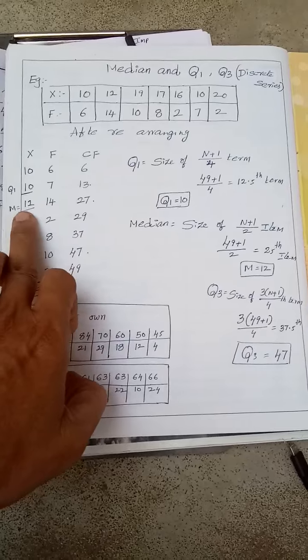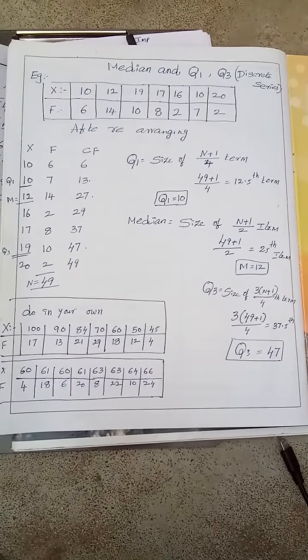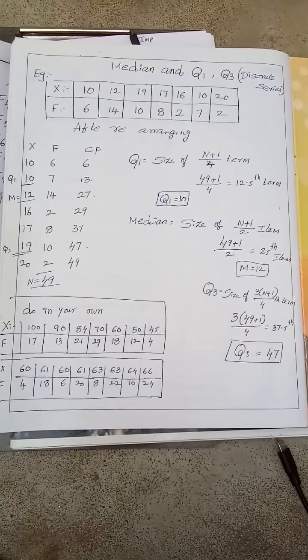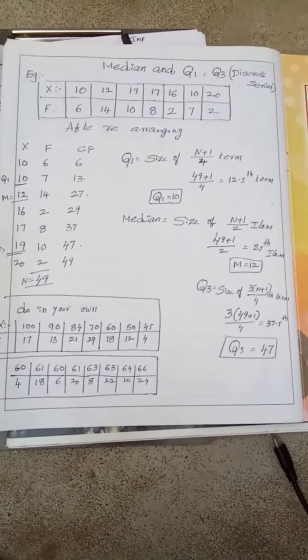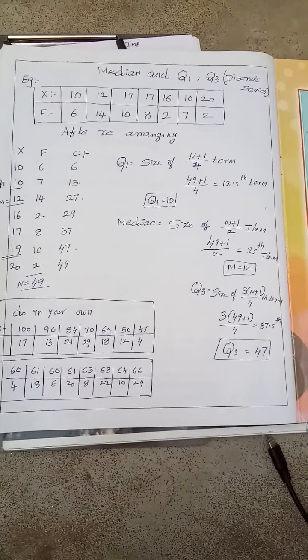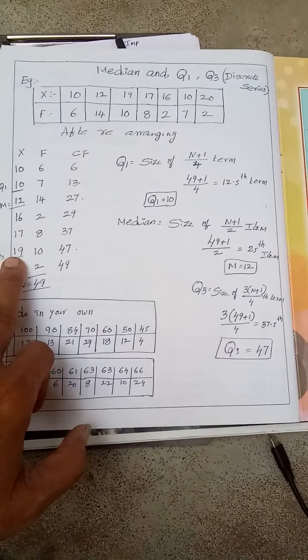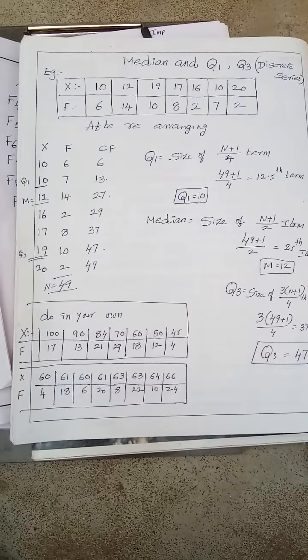Like that only Q3 I have done, 3 into n plus 1 by 4. Size of 3 into n plus 1 by 4th term is 3 into 49 plus 1 by 4, 37.5. But I am getting 37.5 here, 19 is the answer. So for your exercise purpose I have given two questions you must practice.